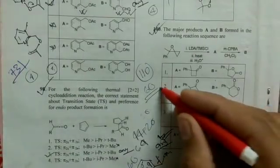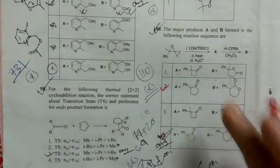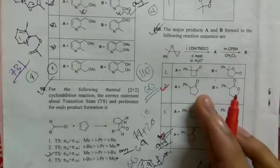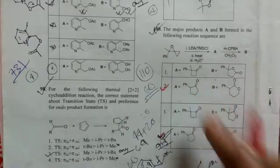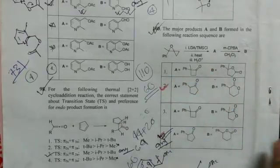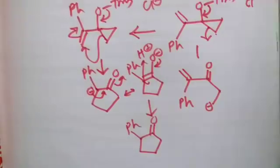The options given, you can see option two and four—they gave this product. So either option two or four may be correct. Now let's look at the second condition.